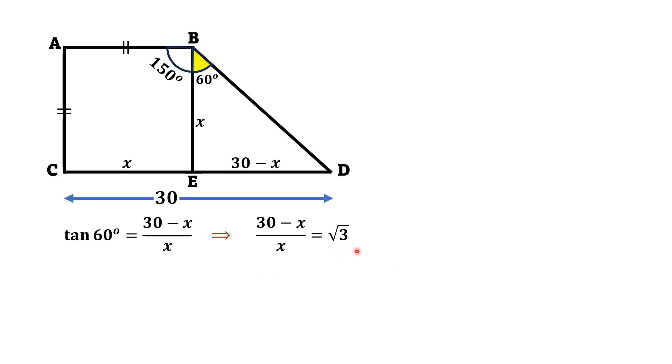Multiplying by X, we will get 30 minus X equals X times square root of 3. Taking X terms to one side, we will get X plus X times square root of 3 equals 30. Taking X common from left and dividing both sides by 1 plus square root of 3, we will get X equals 30 divided by (1 + √3).